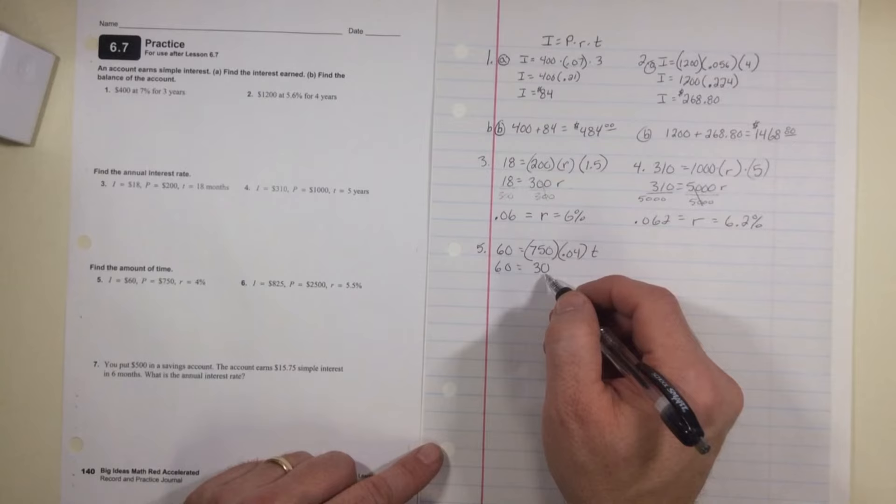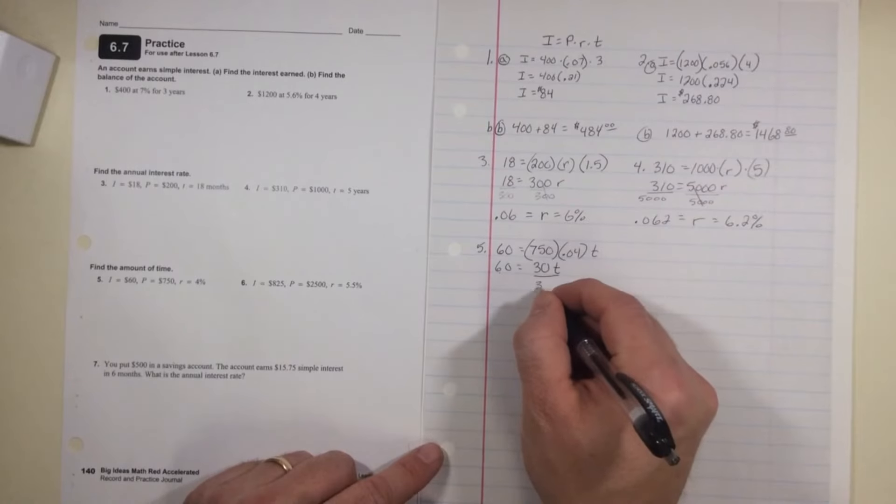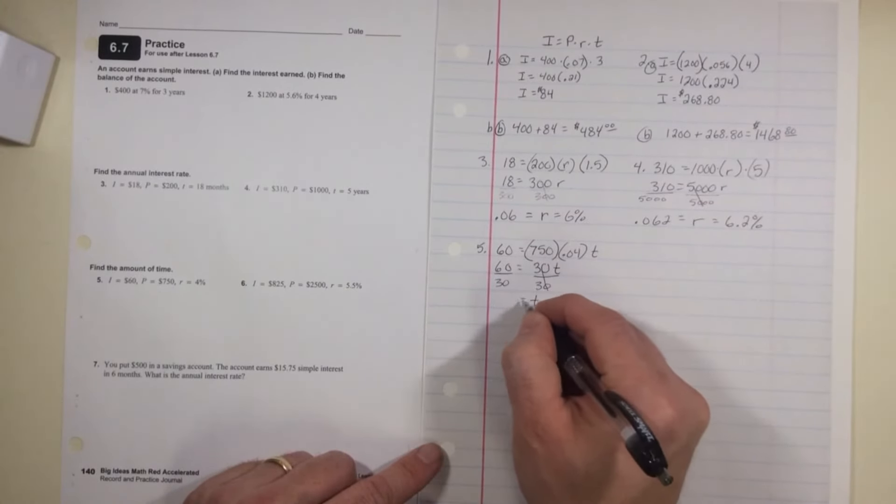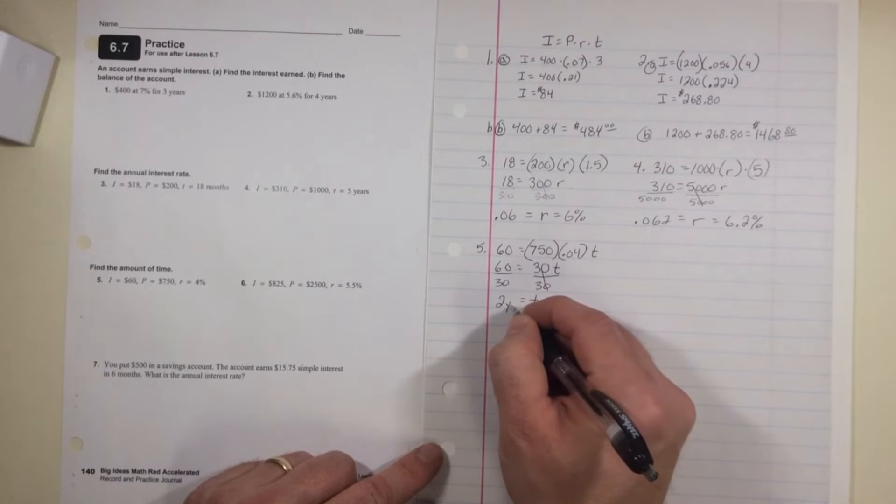Interest equals 30t. Divide by 30, and t equals two, yeah that's right, 2 years.